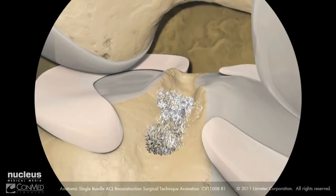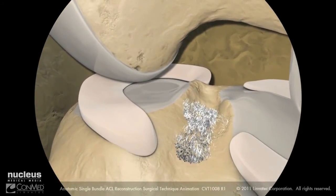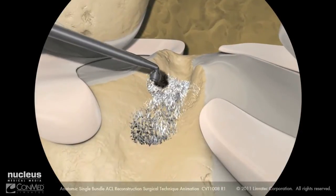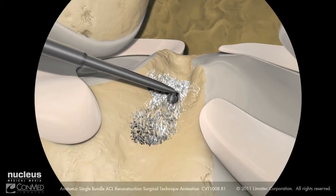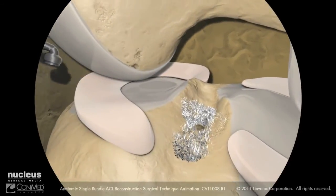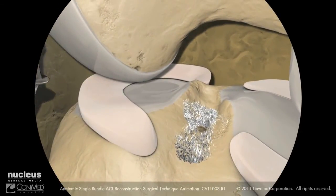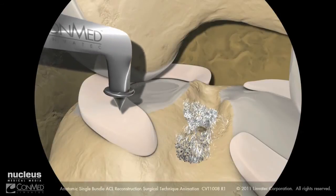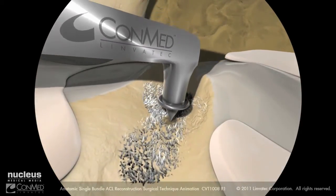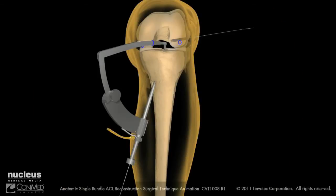Switch the arthroscope to the anterolateral portal. Insert the light wave ablader into the anteromedial portal to mark the center of the tibial ACL footprint. Set the angle of the pin ACL guide to 55 degrees. Insert the tip into the anteromedial portal, placing the tip of the guide into the center of the tibial ACL footprint. Then advance the external guide sleeve flush to the anterior tibial cortex.